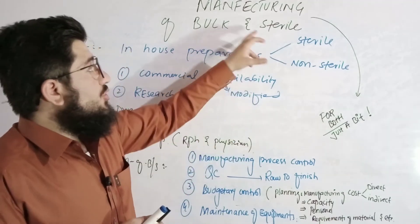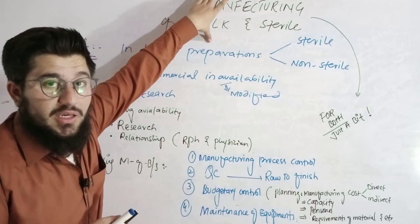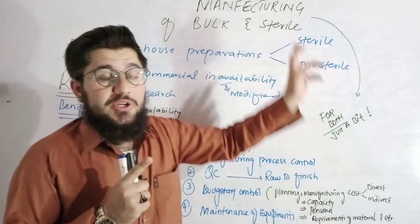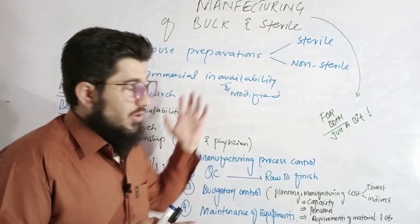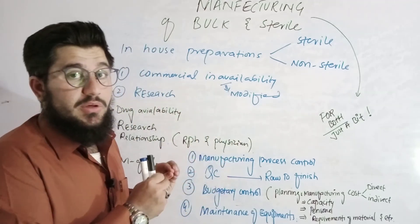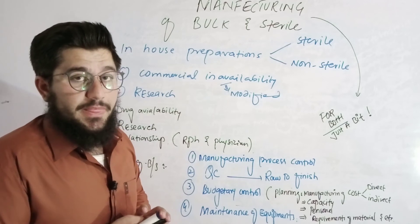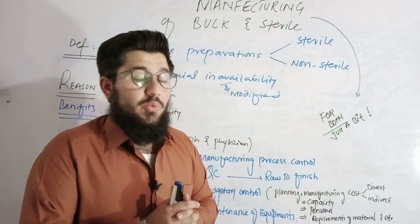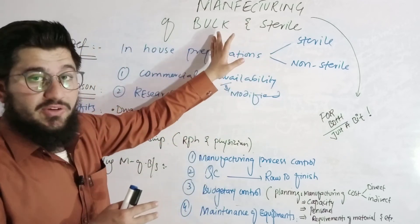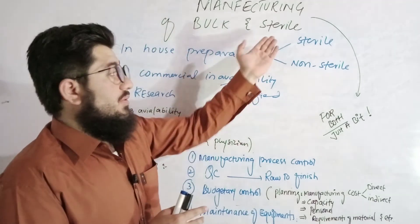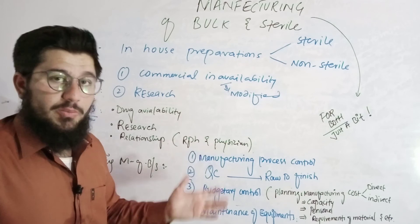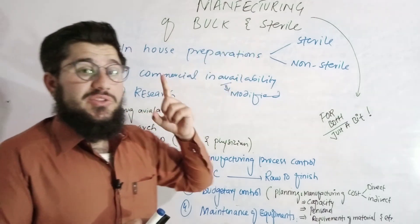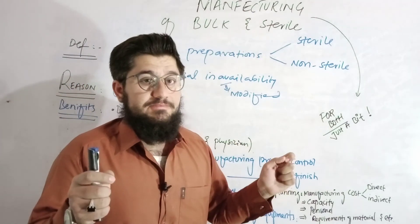This is all about manufacturing of bulk and sterile. One thing you must remember: you must differentiate these two topics by one point. For sterile preparation, we need a sterile area — and the rest of the points are equally applicable to both topics. These are two topics merged together, so don't feel confused when asked. If asked about bulk manufacturing, use the entire topic. If asked about sterile manufacturing, use the entire topic and just add one point at the end: for sterile preparations, we need a sterile area.